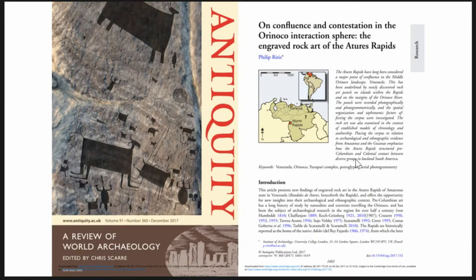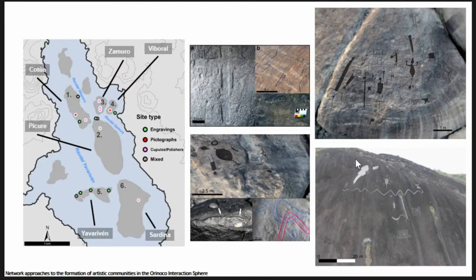The funding came from a paper in Antiquity in December, basically looking at proposing ways forward in the study of rock art in northern South America broadly, but with a particular case study on the Artemis Rapids, which marked the transition between the Little Orodoko and the Upper Orodoko. It's the last point at which the river is traversable — it doesn't matter if you come in a jet ski, a canoe, or a galleon.